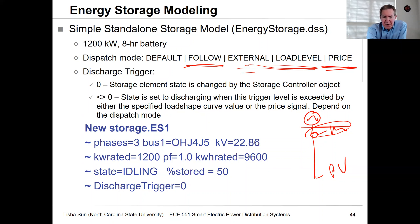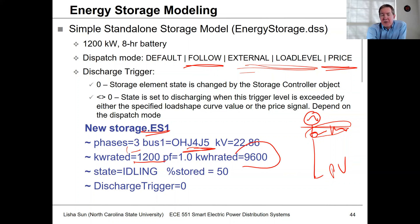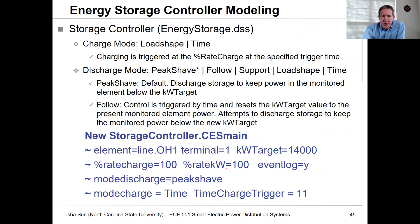What we're doing in this case is defining a new storage device. It's three-phase, installed at a specific location, rated in kilowatts. The energy capacity is 9,600 kilowatt-hours. At 1,200 kW, that would be 9,600 divided by 1,200 — an eight-hour battery. We also set the initial state of charge.